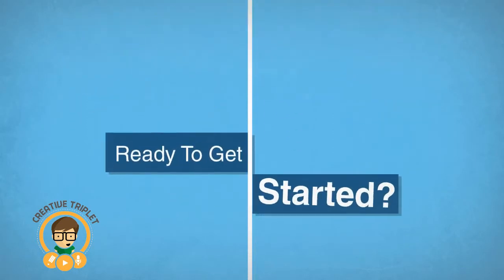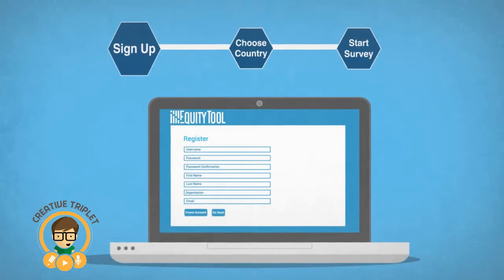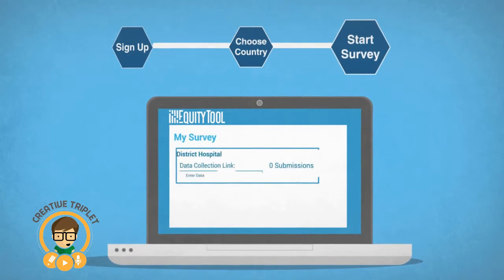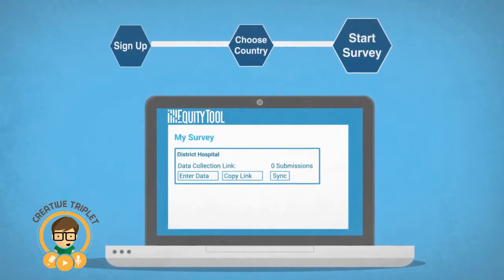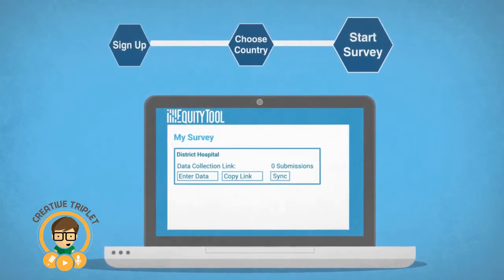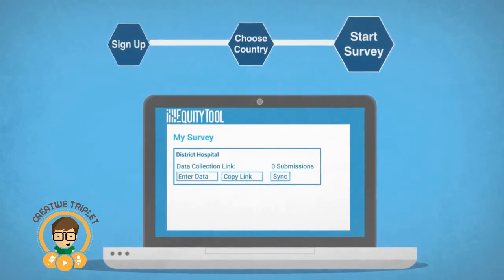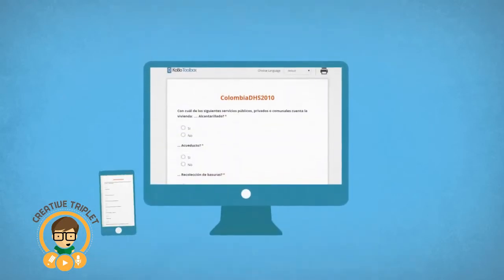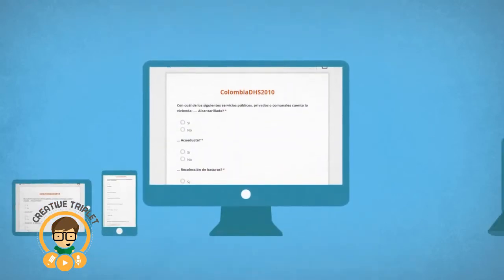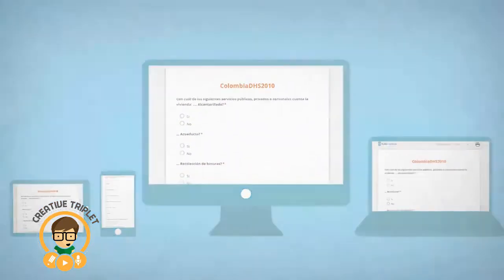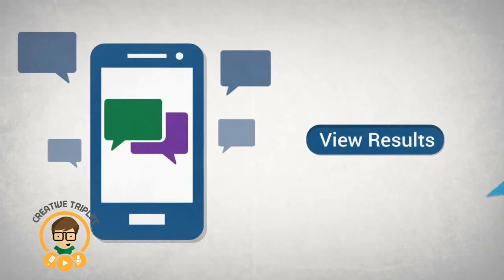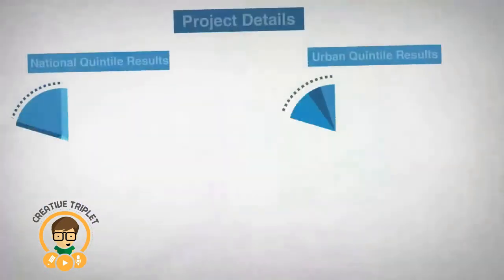Ready to get started? After signing up, choose your country and start a survey. You'll then get a short questionnaire that you can fill in with your clients on any browser-enabled mobile phone, tablet, or computer. Once you've collected responses, you can click a button to automatically see the results.